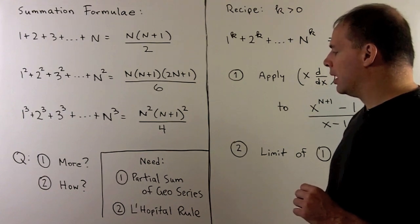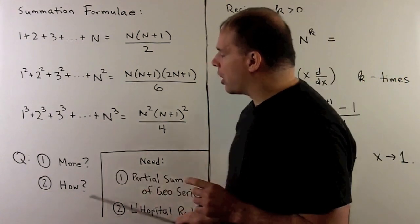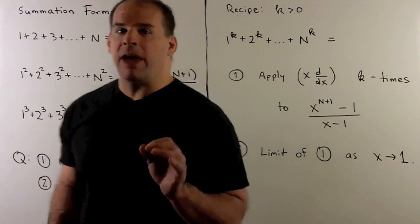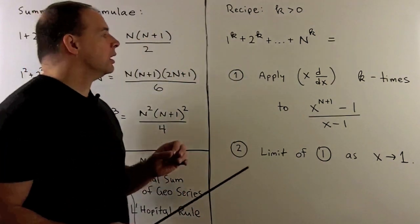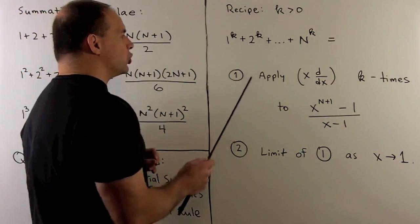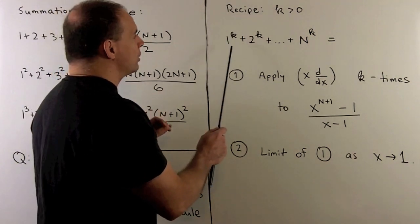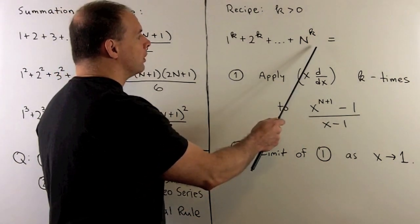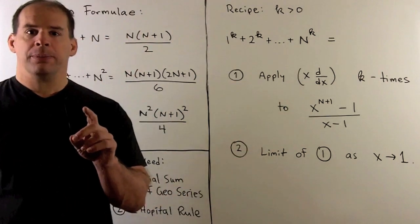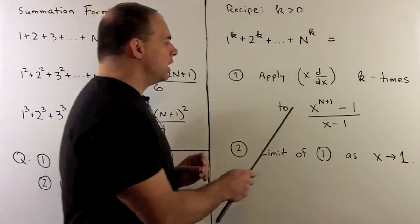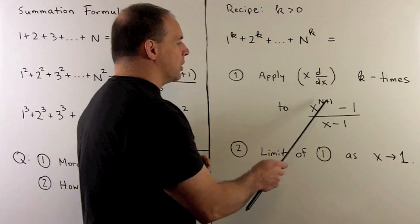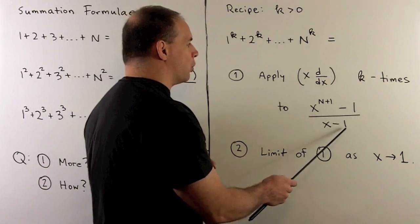Now the answer to our two questions is given by the following recipe. So we have k, a positive integer. I want to take the sum of the k powers of 1 through n. The way we find this, I'm going to start with this function here: x raised to the (n+1) minus 1, over (x-1).